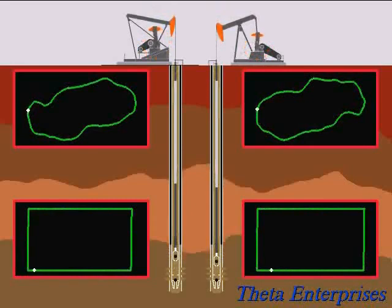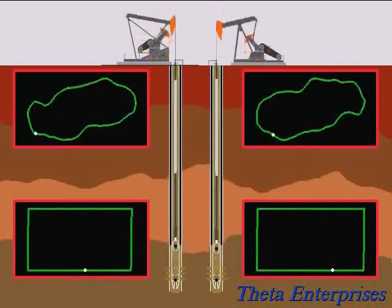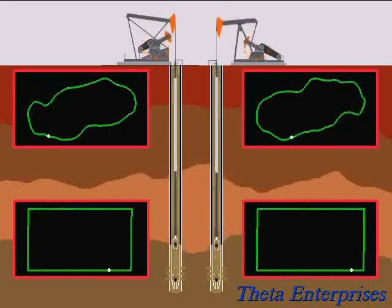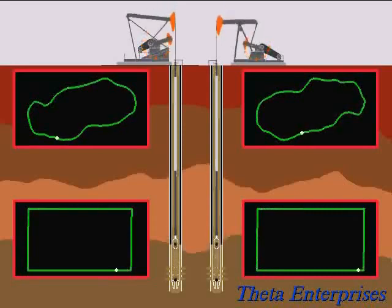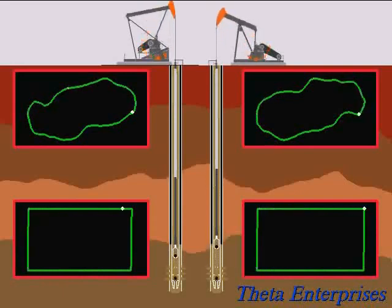The dynamometer card is different. The polish rod velocity is different — the Mark II has a longer, time-wise stroke length, so it has lower acceleration and lower dynamic loads than the conventional. But on the downstroke the Mark II has to go faster than the conventional. Those differences show up in the way the rod string moves and the way stress propagates through the rod string.